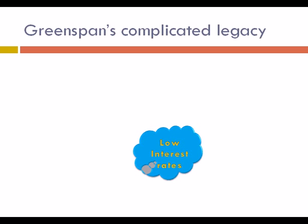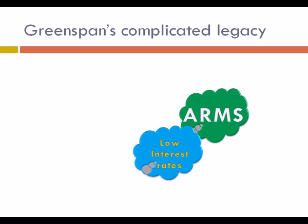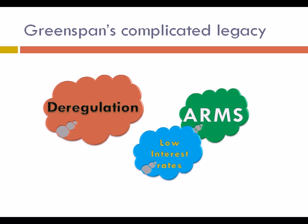Furthermore, in a speech at the National Credit Union Association in 2004, Greenspan argued that many families would have benefited from getting adjustable rate mortgages and advocated that banks do more to offer these types of mortgages at a time when interest rates would be rising. He was also a strong proponent of deregulation in the derivatives markets, particularly in areas such as credit default swaps and collateralized debt obligations.